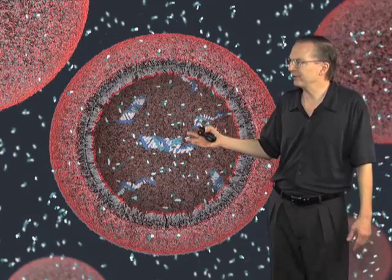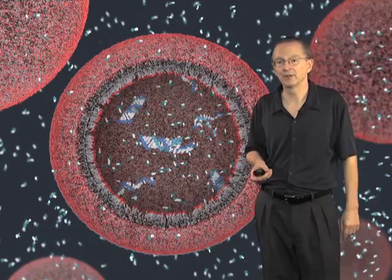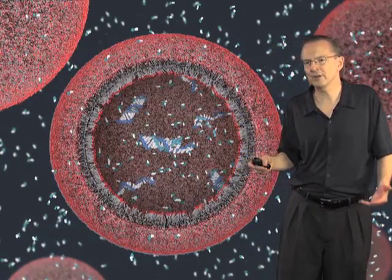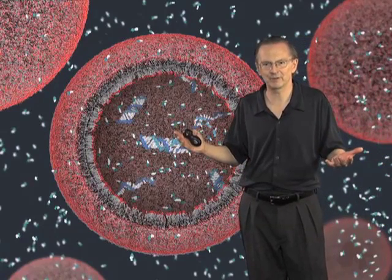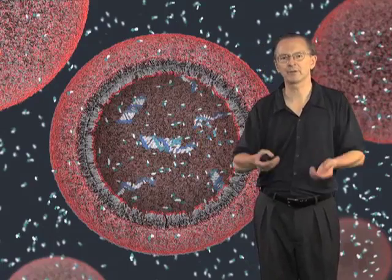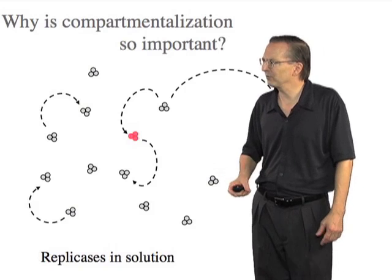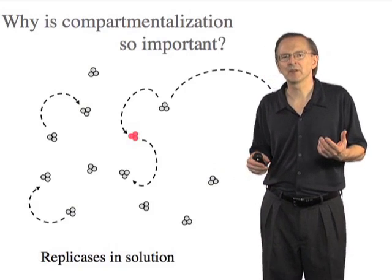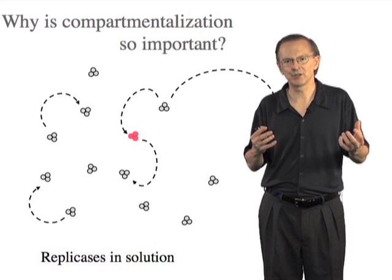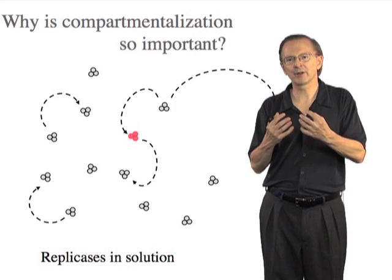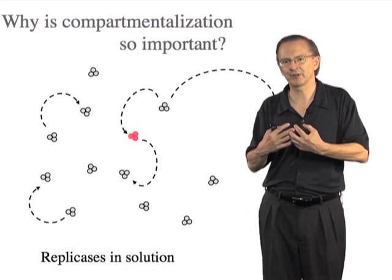When we're thinking of a complex composite system like this, the question often arises as to why really bother with the membrane compartment. Why not just let the RNA molecules replicate in solution? One way of thinking about that is that for Darwinian evolution to emerge, molecules that are in some way better than their neighbors have to have an advantage for themselves.